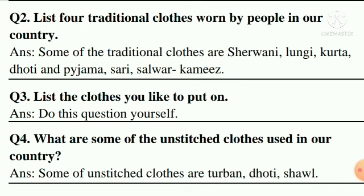Draw a line and write question number four: What are some of the unstitched clothes used in our country? The answer is: some unstitched clothes are turban, dhoti, and shawl. After the answer, draw a line with the help of your scale.